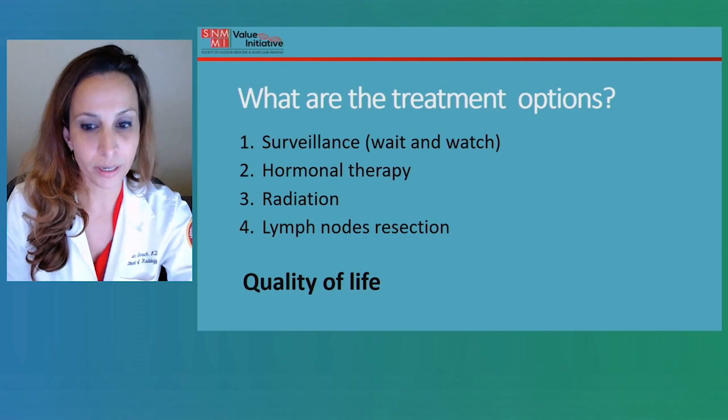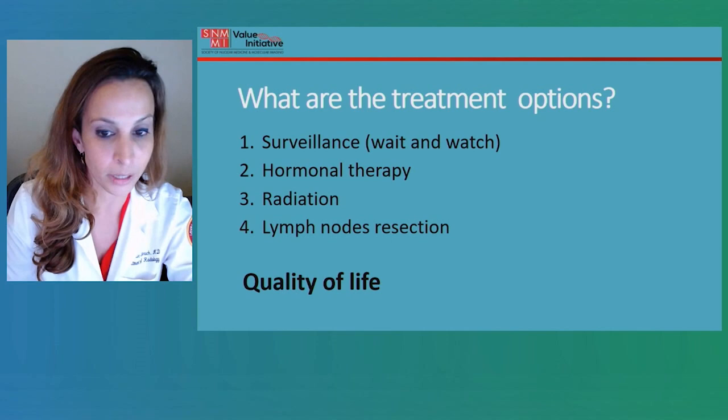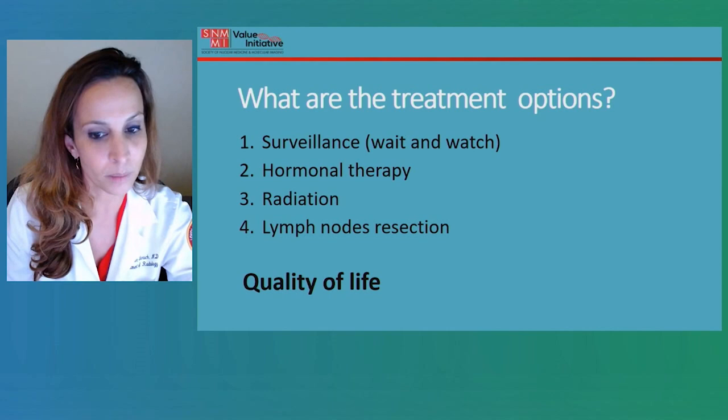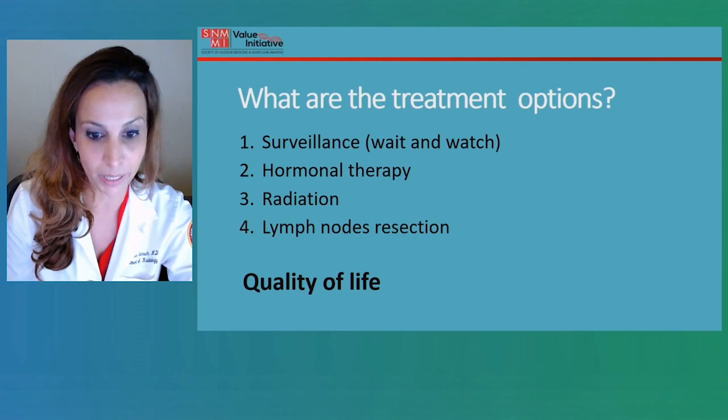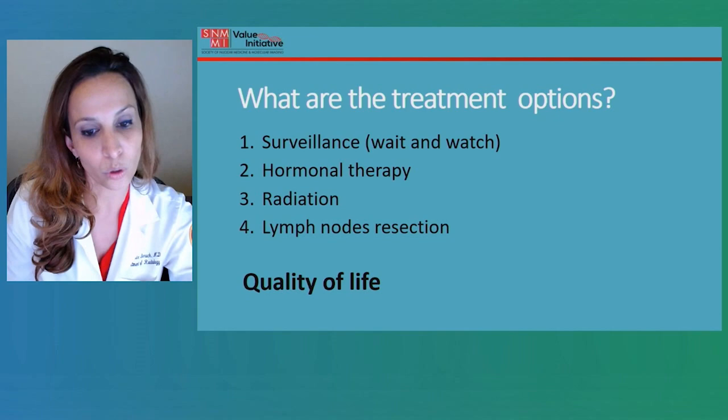So what are the treatment options? This is brief because this presentation is not aimed at speaking about treatment. But overall, when we have early recurrence, we can choose between surveillance — where the physician watches the PSA and decides based on findings — or sometimes hormonal therapy, radiation, and other discussions about lymph node resection that can be for diagnostic purposes, possibly combining into treatment. All of it is done together with preservation of quality of life.